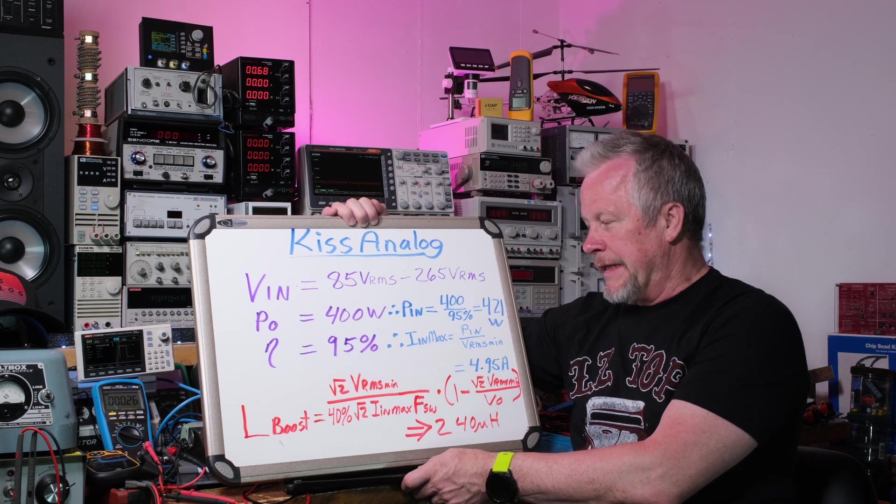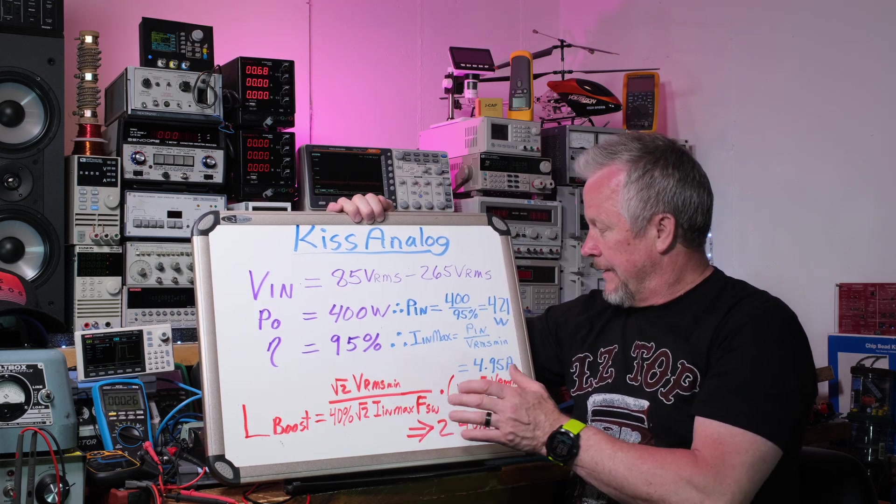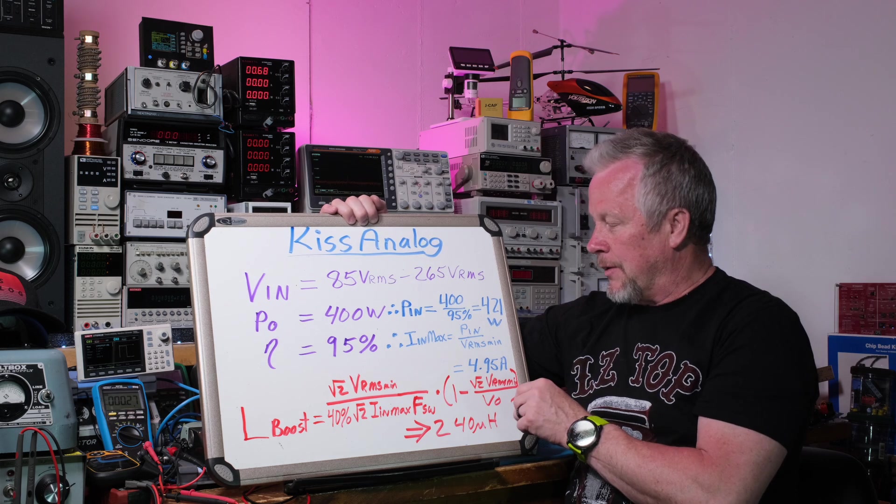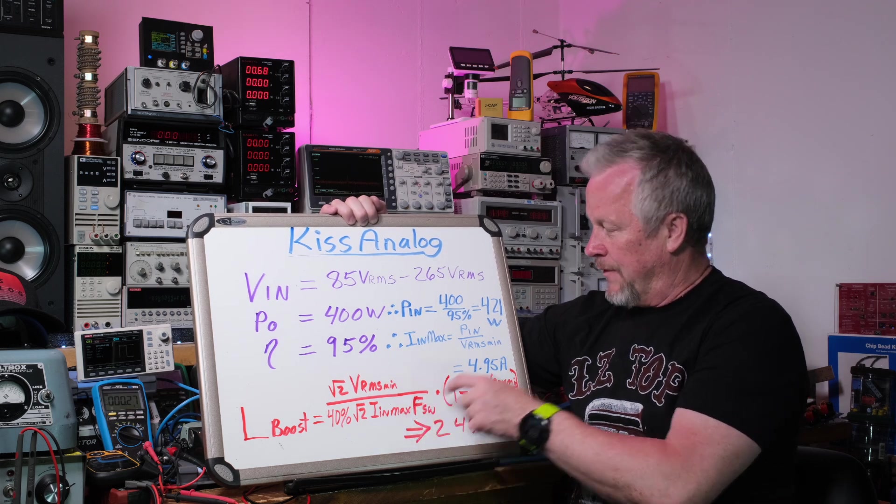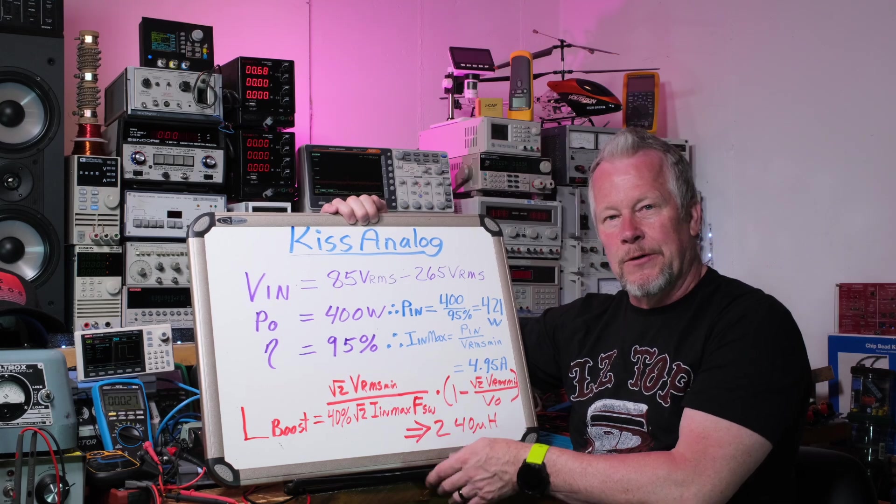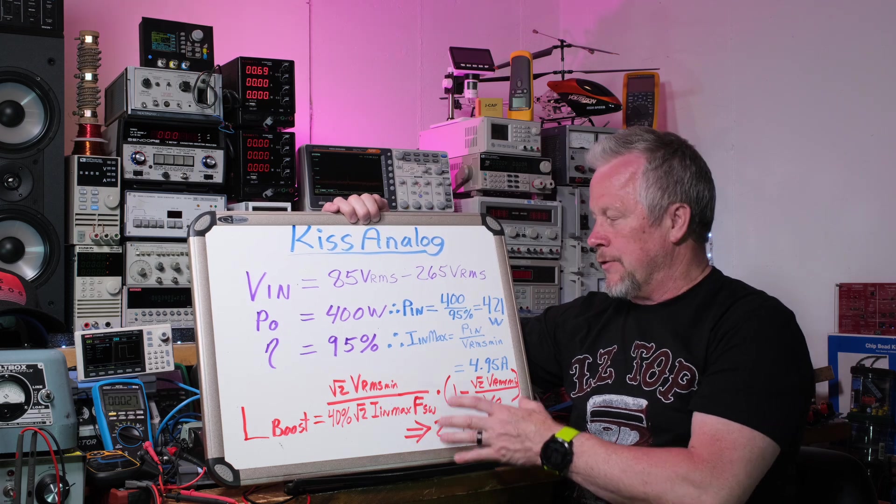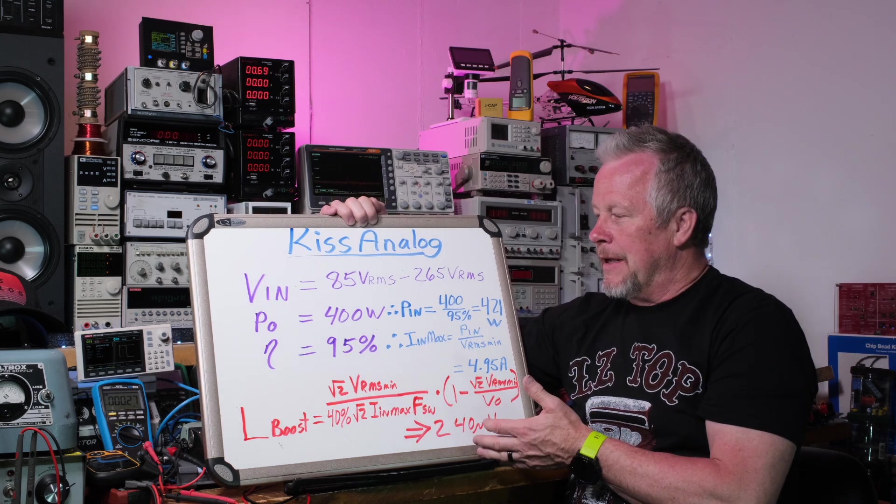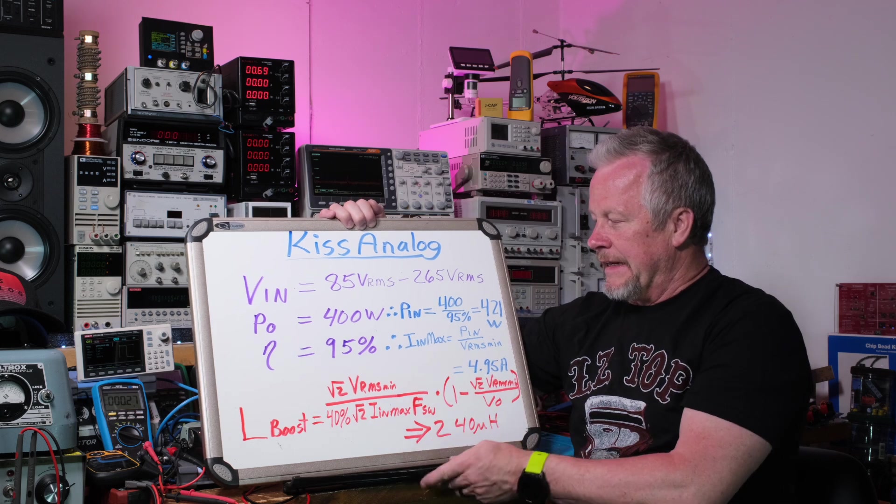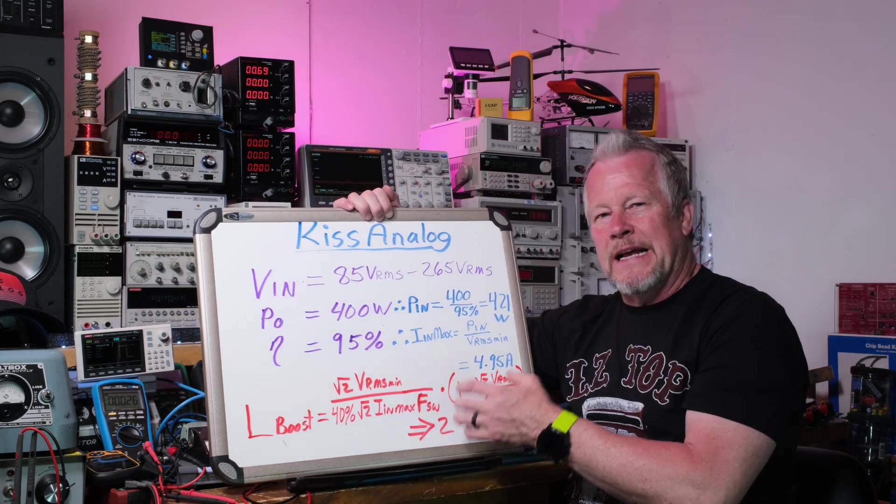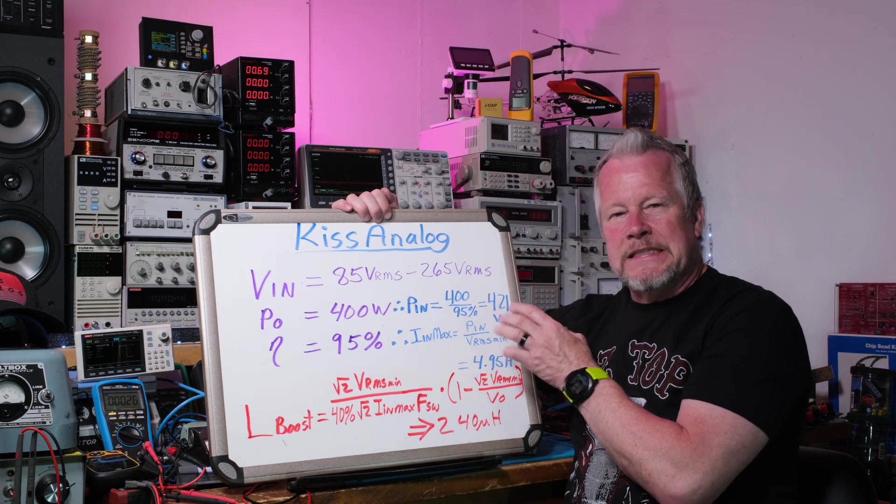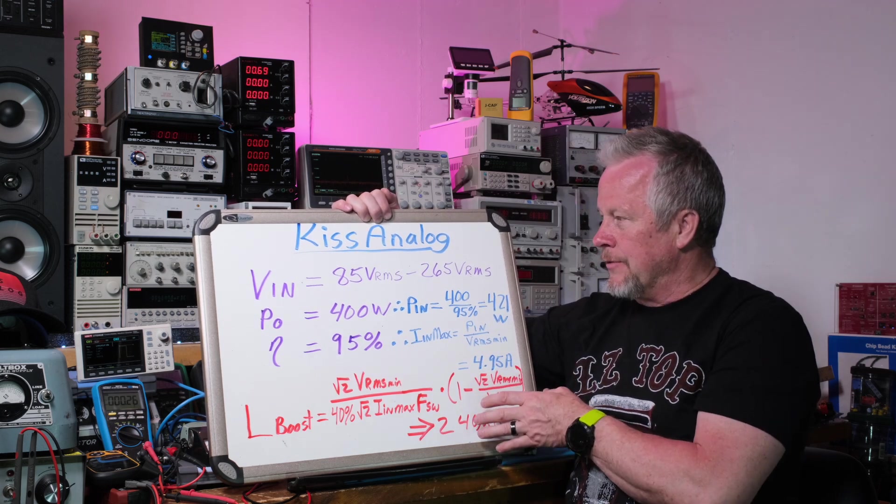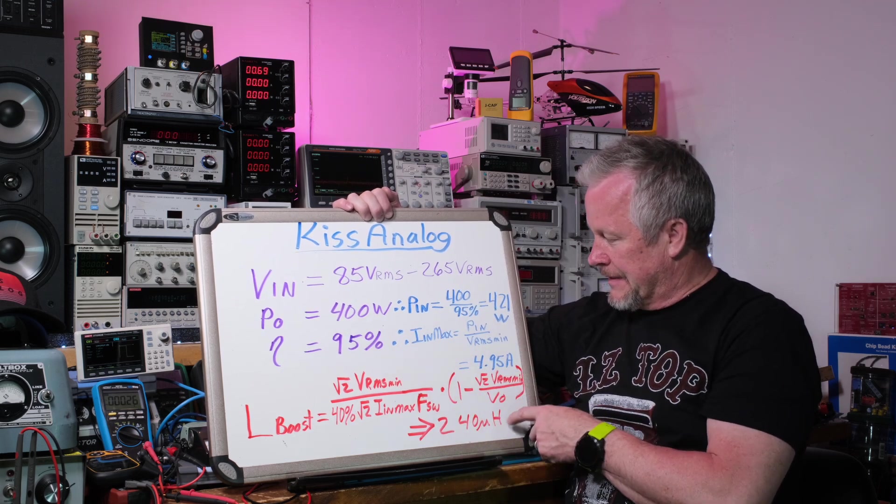So there we go. Looks like we need 240 microhenries and we need an inductor that can handle this RMS current, but peak currents of this plus half of the 40 percent. So yeah, we'll select the inductor next video where I'll kind of go further into this. We'll come up with the current that the inductor has to handle. But you kind of get an idea here. If this is five amps, 40 percent of that is two amps, so it's one amp. So it's basically six amps peak that it has to handle, five amps RMS.